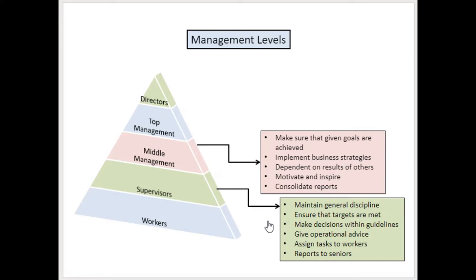Supervisors are the ones who ensure that targets are met, and that means they will sometimes encourage or even threaten workers to make sure that targets are indeed met. They make certain decisions within guidelines, but only decisions that have been delegated to them. They give operational advice to workers because they are often the operational experts themselves — not that long ago they were workers and still know how to do the job.